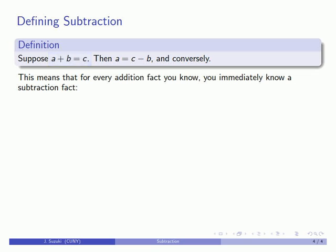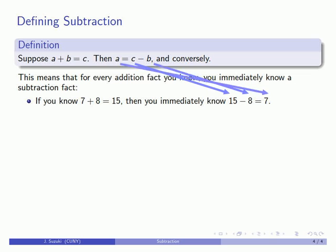What is useful here is that every addition fact I know immediately translates into a subtraction fact. For example, I know 7 + 8 = 15. I know a + b = c. Then I can rearrange it into a subtraction fact: 15 - 8 = 7.